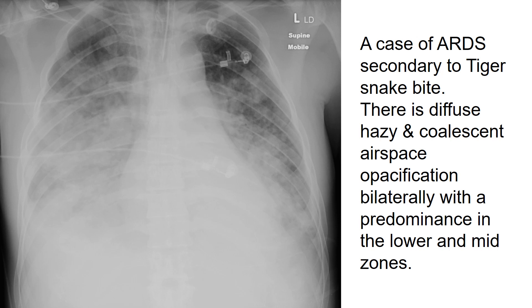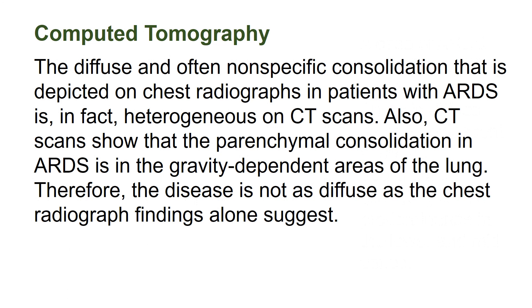This is a case of acute respiratory distress syndrome secondary to tiger snake bite. There is diffuse, hazy, and coalescent airspace opacification bilaterally, with a predominance in the lower and mid-zones.